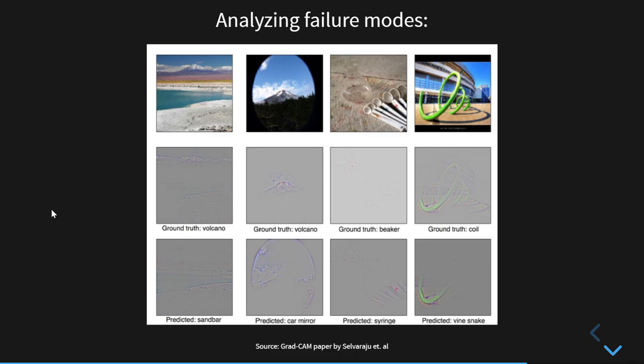So GradCam can also be used to see why a network misclassifies some image. So here the network predicts it as a sandbar and we can see from the visual explanation why it says so. We can see the highlighted portions of coarse sediment which looks like a sandbar. Here we can see that the model predicts it to be a car mirror particularly because of the distinctive oval shape. And here we can see the highlighted spoon bodies that resemble the shapes of syringes. And lastly, here the green curvy shape misleaves the network to predict it to be a wine snake. So we see how GradCam can provide reasonable visual explanations for these misclassifications.